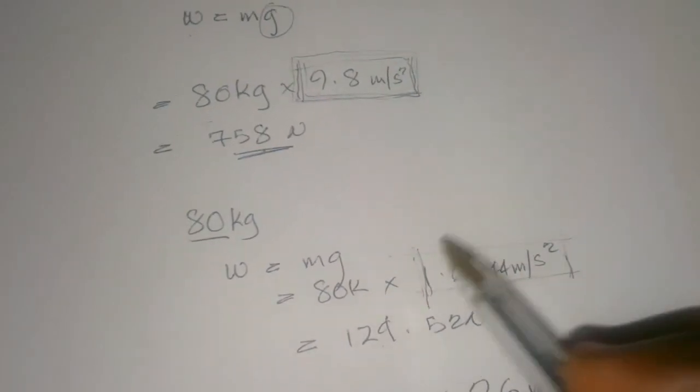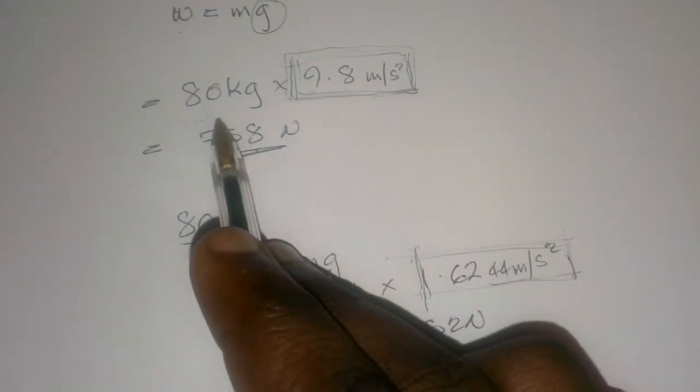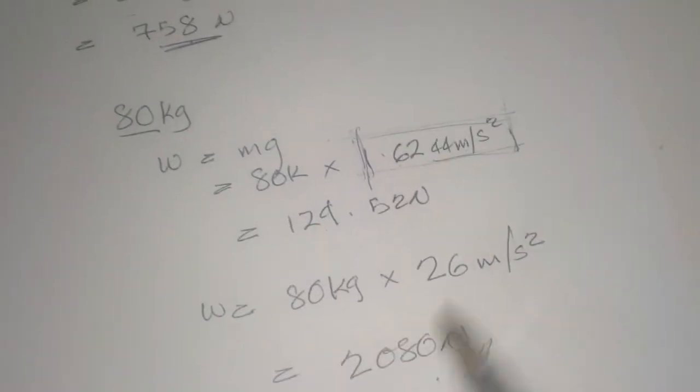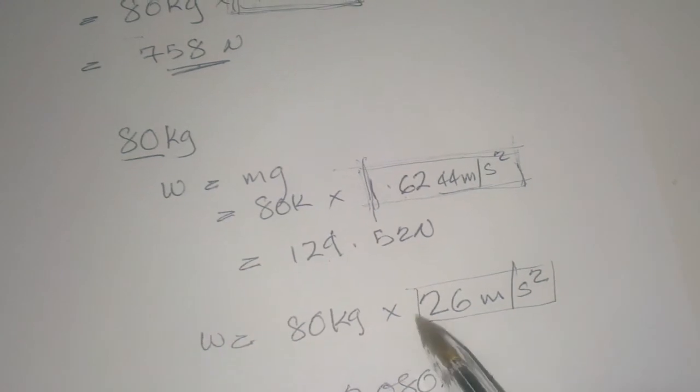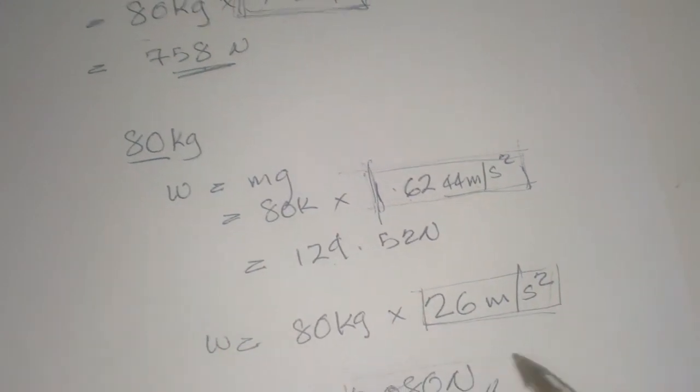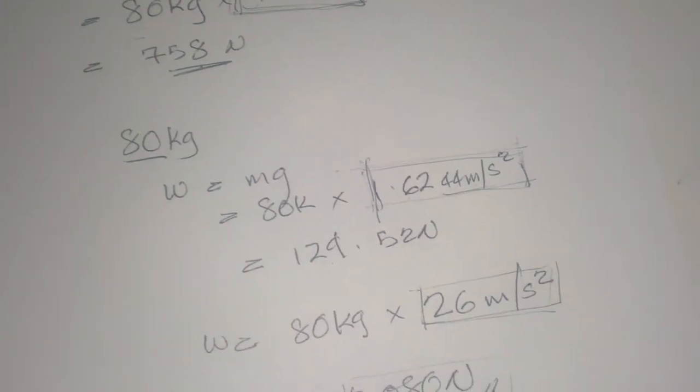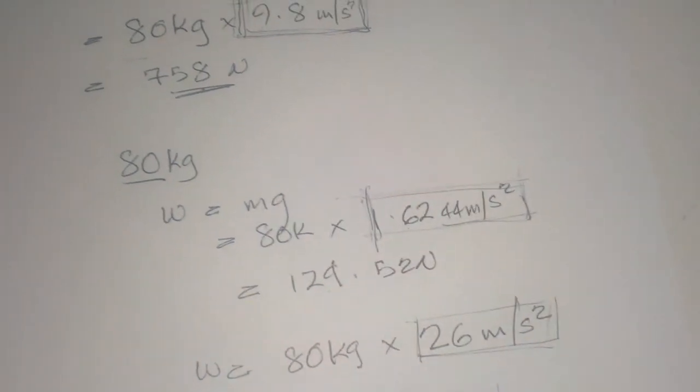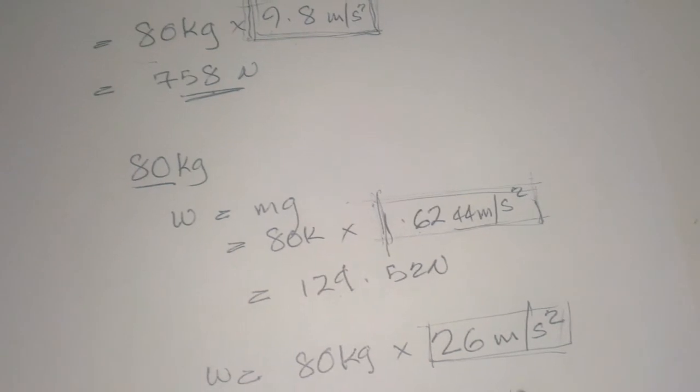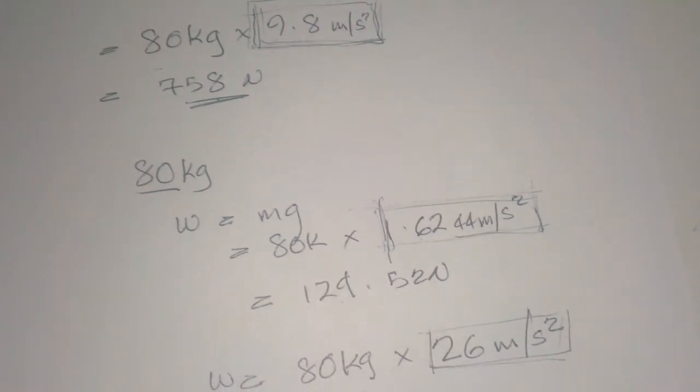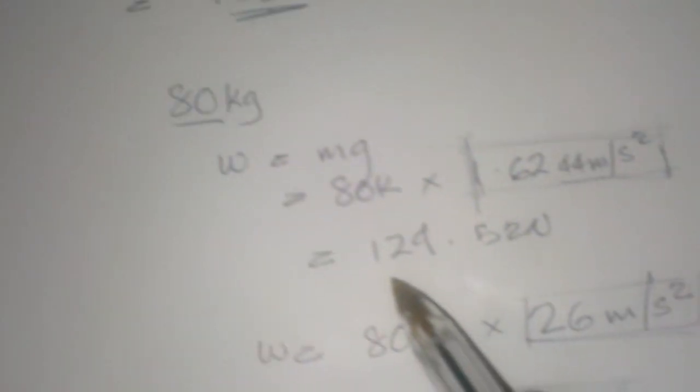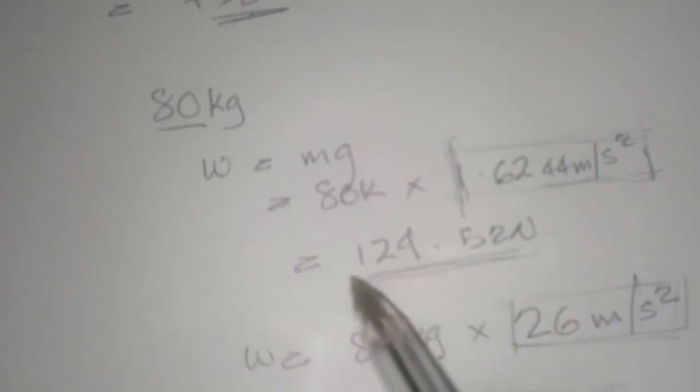As we can see, my mass hasn't changed, but my g has, so I weigh differently. I would weigh 2.6 times more on Jupiter than I do here on Earth, and I would weigh a sixth less on the Moon than I currently do on Earth.